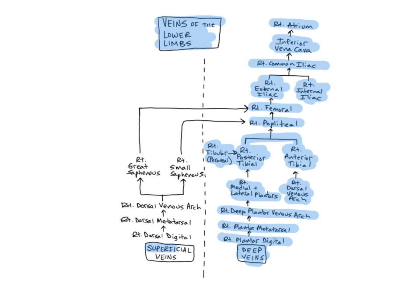The superficial veins of the lower limbs begin with the dorsal digital veins, which drain blood from the toes, and then merge into the dorsal metatarsal veins, which run alongside the metatarsal bones of the foot. The dorsal metatarsals merge into the dorsal venous arch, networks of veins that enter into the dorsum, or top of the foot.